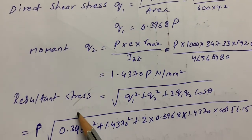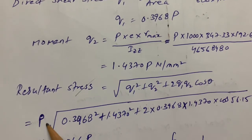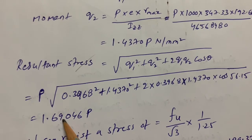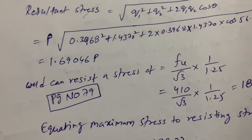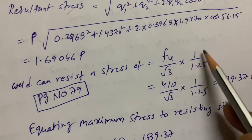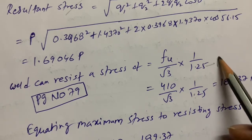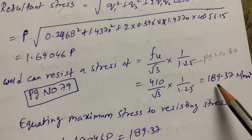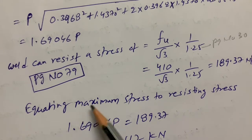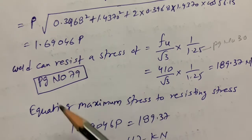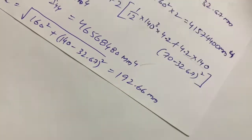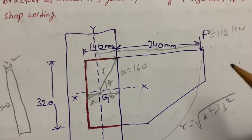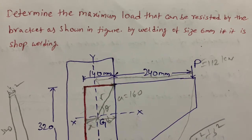Finally, we calculate the resultant stress by substituting all values into the resultant formula and taking P as common. The weld's resisting stress is calculated using the code formula: fu / (√3 × γ_mb), from page number 79 of the welding section, with the partial safety factor from page 30, table 5. Equating maximum stress to resisting stress, we get P = 112 kilonewtons. Thank you for watching.